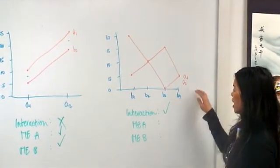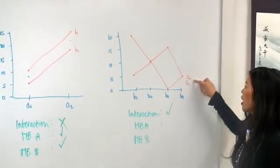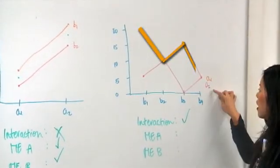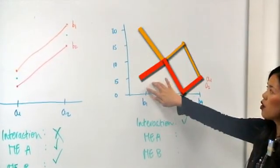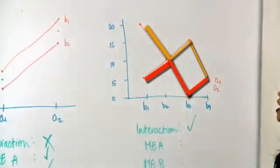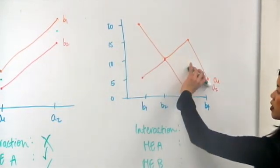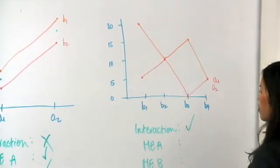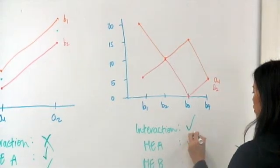For main effect A, we're going to look at the lines. So A1 is our orange line and A2 is our red line. Overall, our orange line is always higher than our red line, right? It stops right around here. So since A1 is always greater than A2, we do have a difference there.